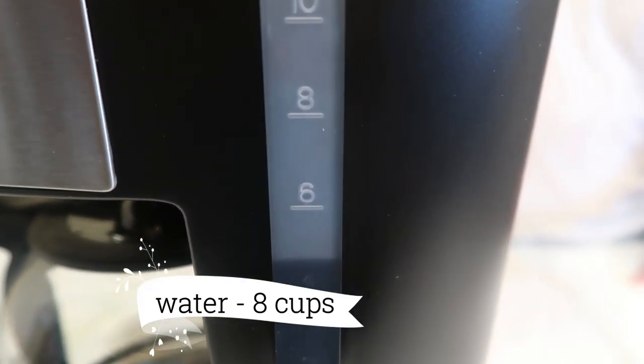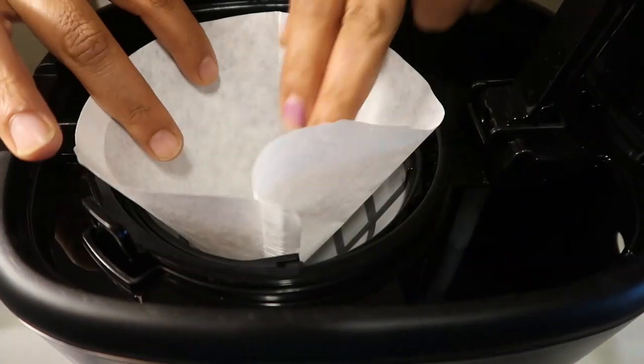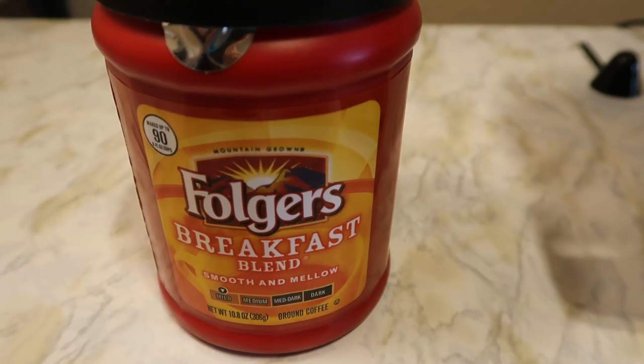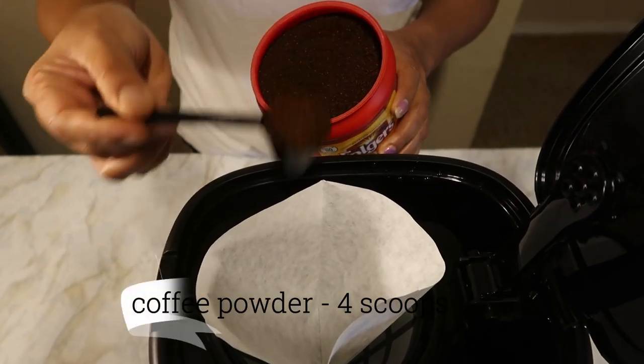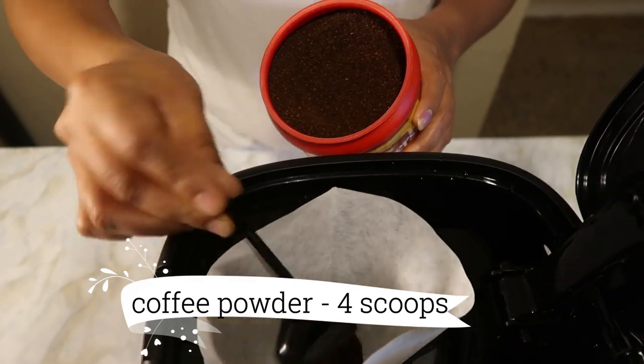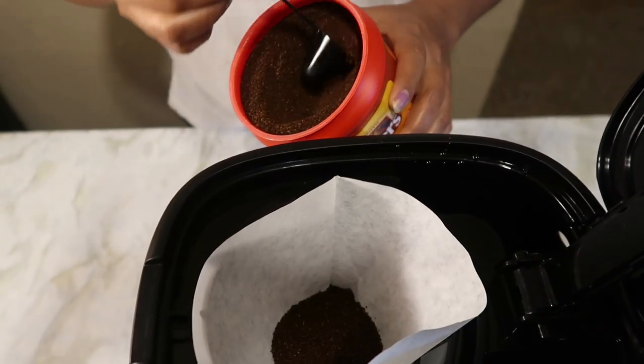am taking 8 cups of water. Place the filter paper. Take coffee powder of your choice. Here I am taking Folgers Breakfast Blend. Add four scoops of coffee powder for eight cups of water.